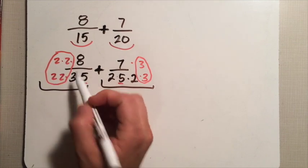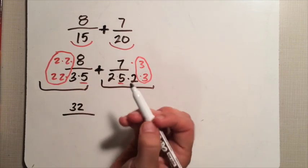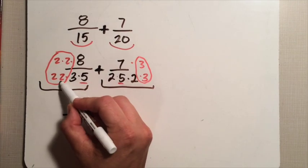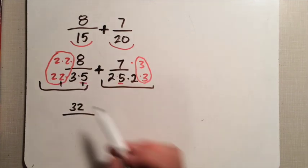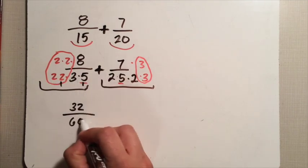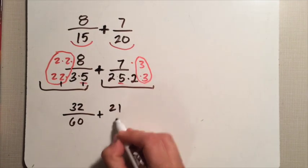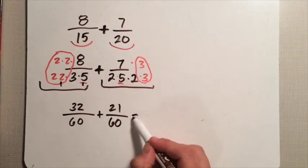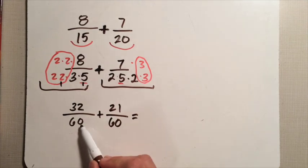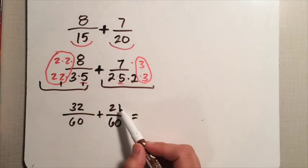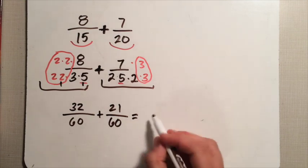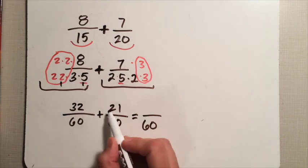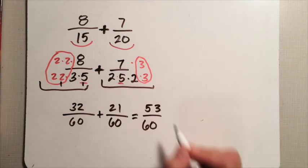Now I'm going to combine my terms — all the multiplication — before I finally add them together at the very last step. Two times two is four, four times eight is thirty-two in the numerator. I multiply two times five first because that's ten, two times three is six, six times ten is sixty — so the denominator is sixty. Seven times three is twenty-one, and the denominator is also sixty. So I've got thirty-two sixtieths plus twenty-one sixtieths, which is fifty-three sixtieths.